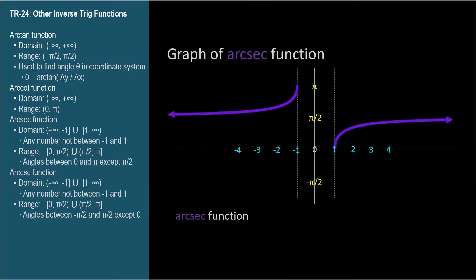The domain of the arcsecant function is all numbers except those between negative 1 and 1. And the range is angles from 0 to pi radians, except pi over 2 radians. The arcsecant can never be pi over 2 radians, because the cosine at pi over 2 is 0, and secant is 1 over cosine.